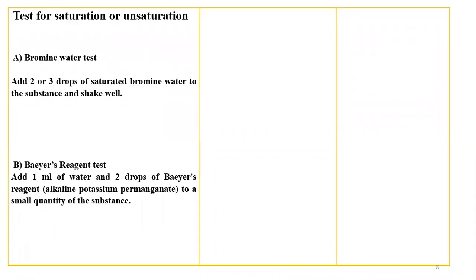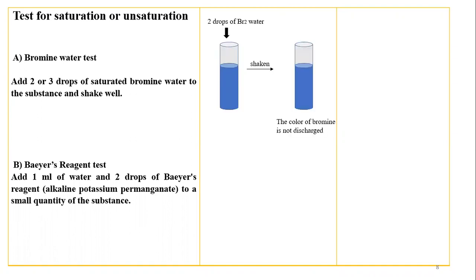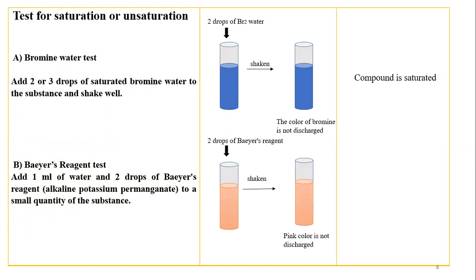We will test for saturation and unsaturation using two tests: the bromine water test and Baeyer's reagent test. In the bromine water test, if the bromine color is discharged it shows unsaturation, but the bromine color was not discharged so the compound is saturated. In Baeyer's reagent test using alkaline potassium permanganate, the pink color was also not discharged, confirming the compound is saturated.